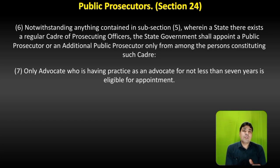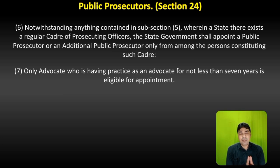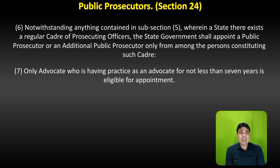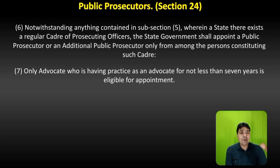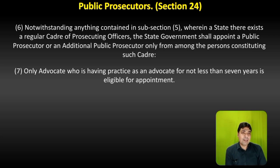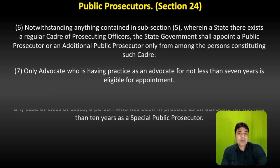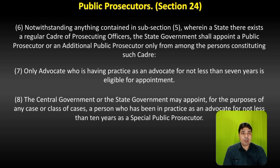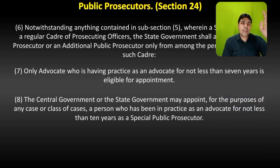Sub-section 7 deals with eligibility: only an advocate who has practiced as an advocate for not less than 7 years is eligible for appointment. So if someone wants appointment as Public Prosecutor or Additional Public Prosecutor, they must have at least 7 years of practice as an advocate.